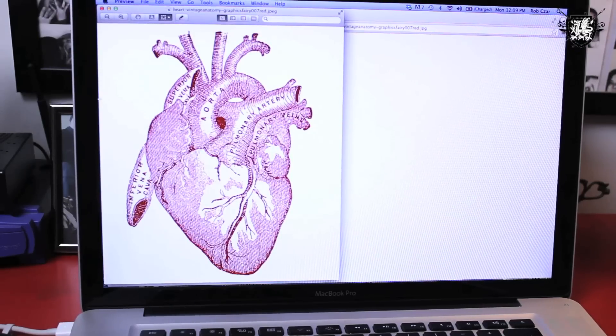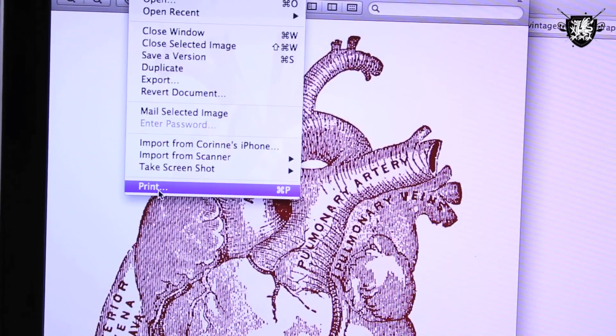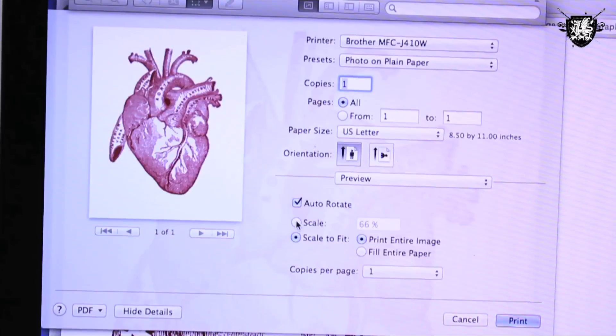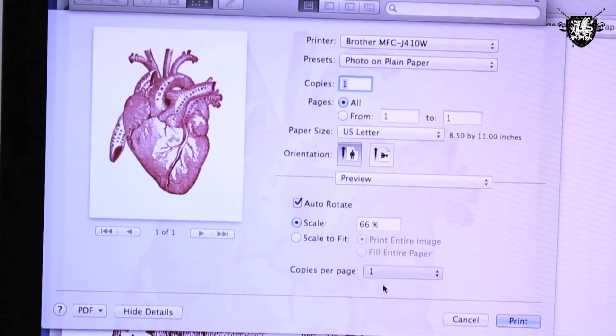Save it to your desktop and open it with preview. Select the print option in preview, then set it to print two images per page, setting the scale at 50% so they both fit on there.